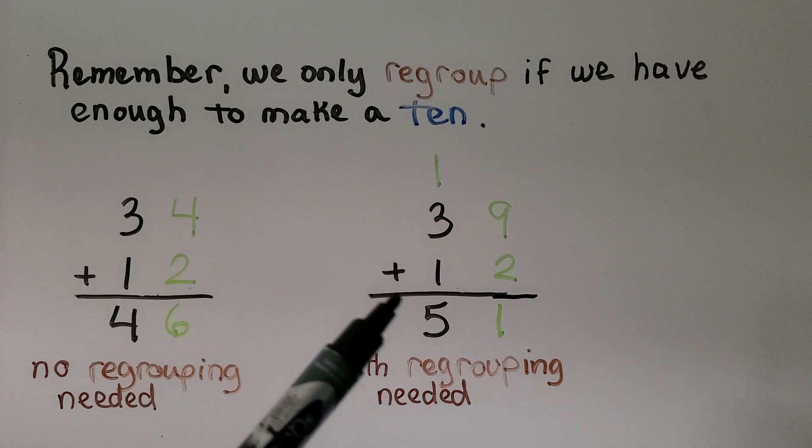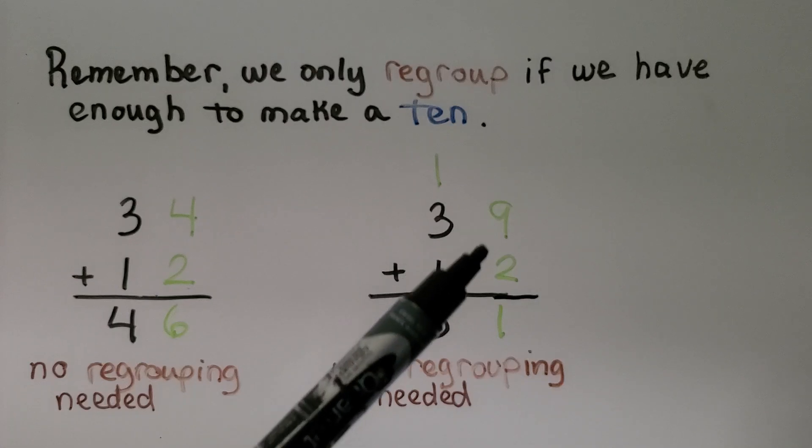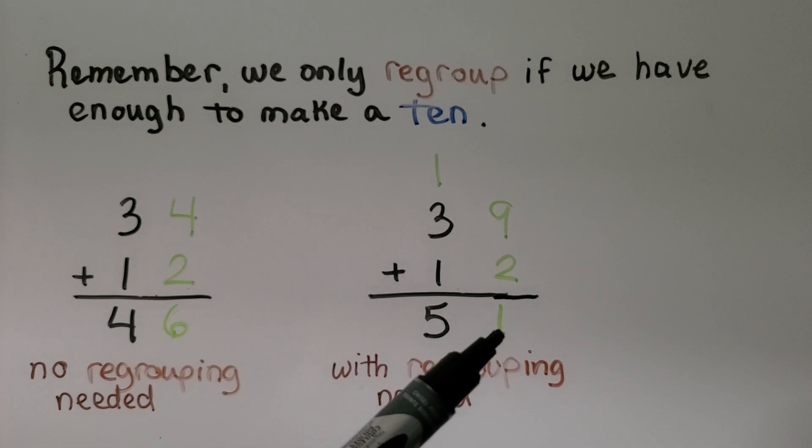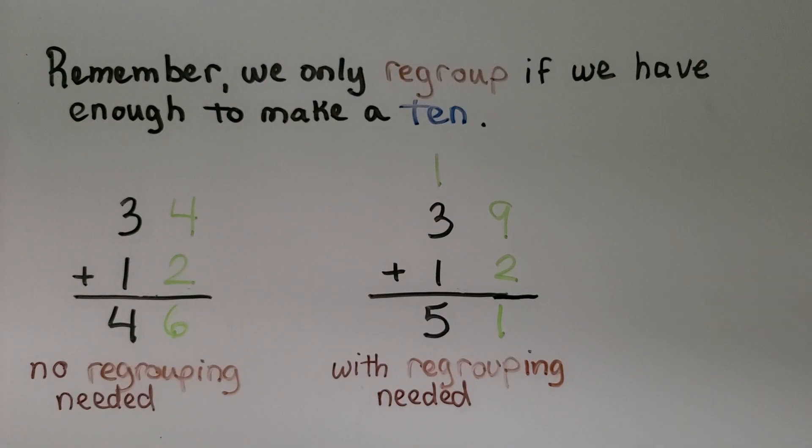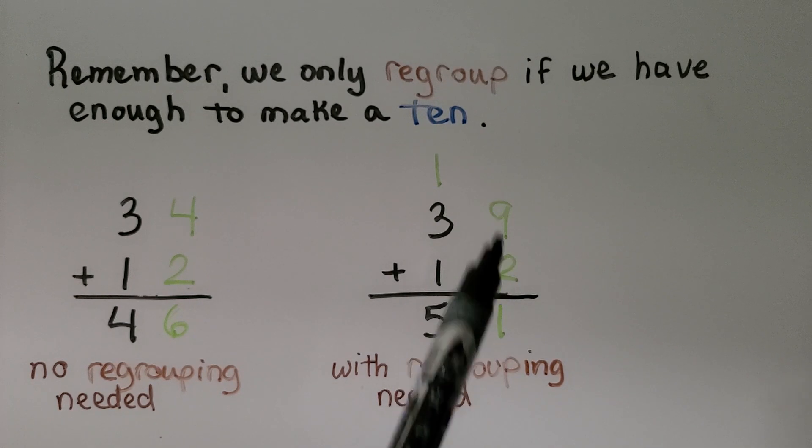But for 39 plus 12, 9 plus 2 is 11. That's 1 10 and 1 1. We put the 1 10 in the tens column. We add the tens. We have 5 tens. It's 51. So regrouping was needed because the ones column was able to make a 10.